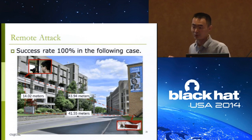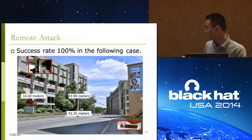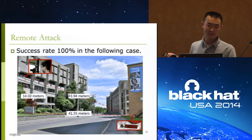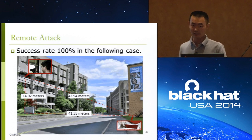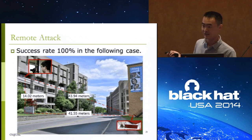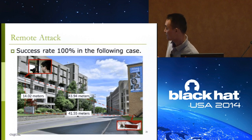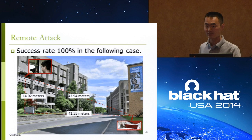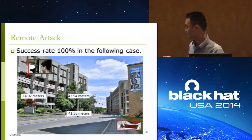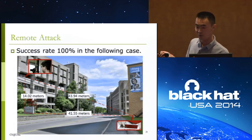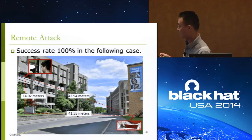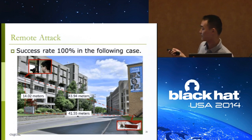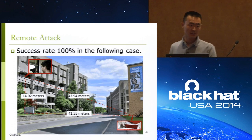We also used a camcorder to demonstrate that our attack can be deployed remotely. The attack scenario shows the attacker hiding in the first floor of a building with a camcorder while the victim sits across the street with an iPad. The distance between them is around 44 meters. We carried out 30 experiments under this scenario and achieved a 100% success rate, demonstrating the severity of this attack.